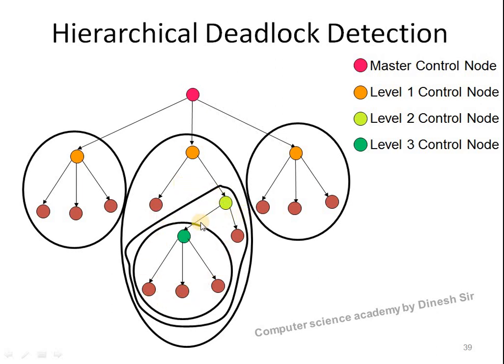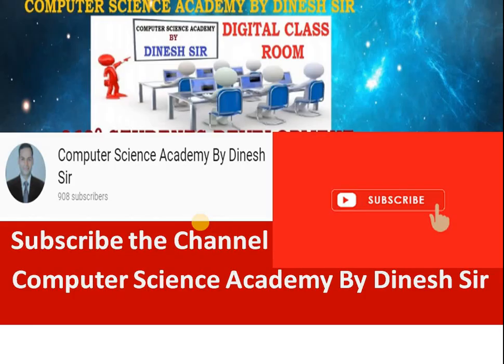So that is the concept of the deadlock detection algorithms. The first one is the centralized algorithm, the second is the distributed detection algorithm, and the third is the hierarchical detection algorithm. Thank you for watching this video. Please subscribe to the channel for more videos.